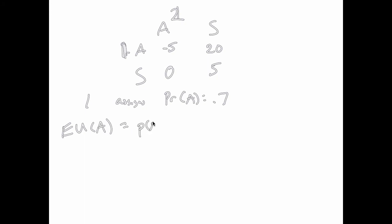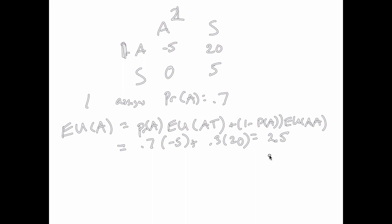Expected utility for advancing is the chance that player 2 advances times what you get if you both advance together. Plus the chance they swerve, times the probability that you advance alone. That's going to equal 0.7 times your advance together, which is negative 5, plus 0.3 times your advance alone, which is 20. That equals 2.5, right? That's negative 3.5 plus 6 is 2.5.